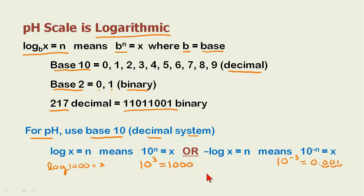I know that the negative log of 1.0 times 10 to the minus 3 is equal to 3. And that's how our definition of a log works.